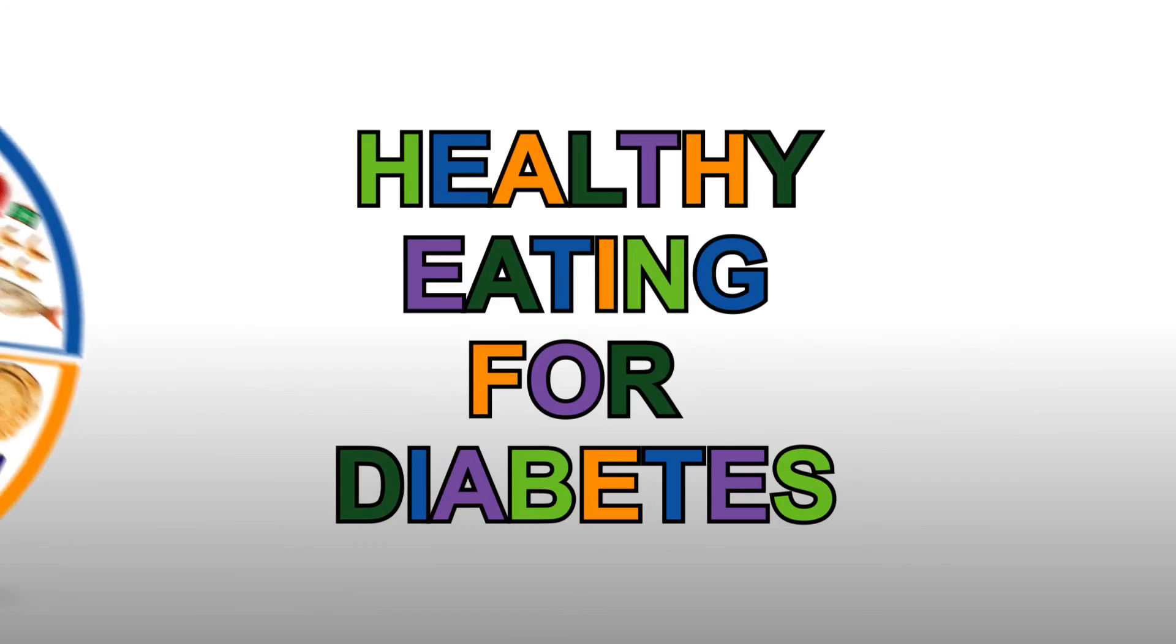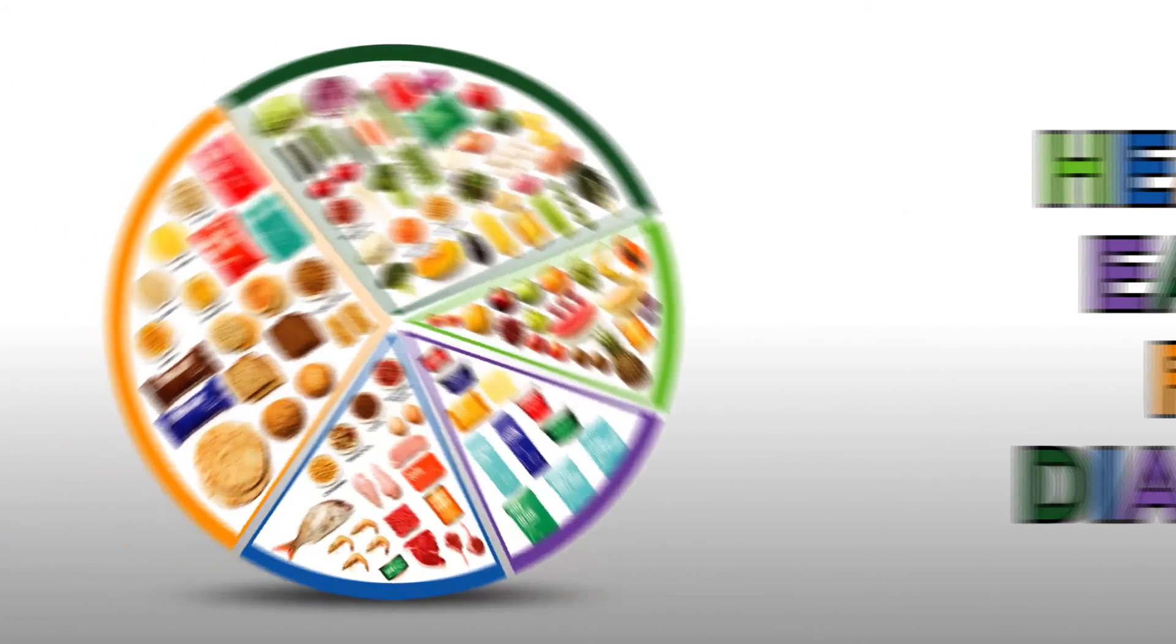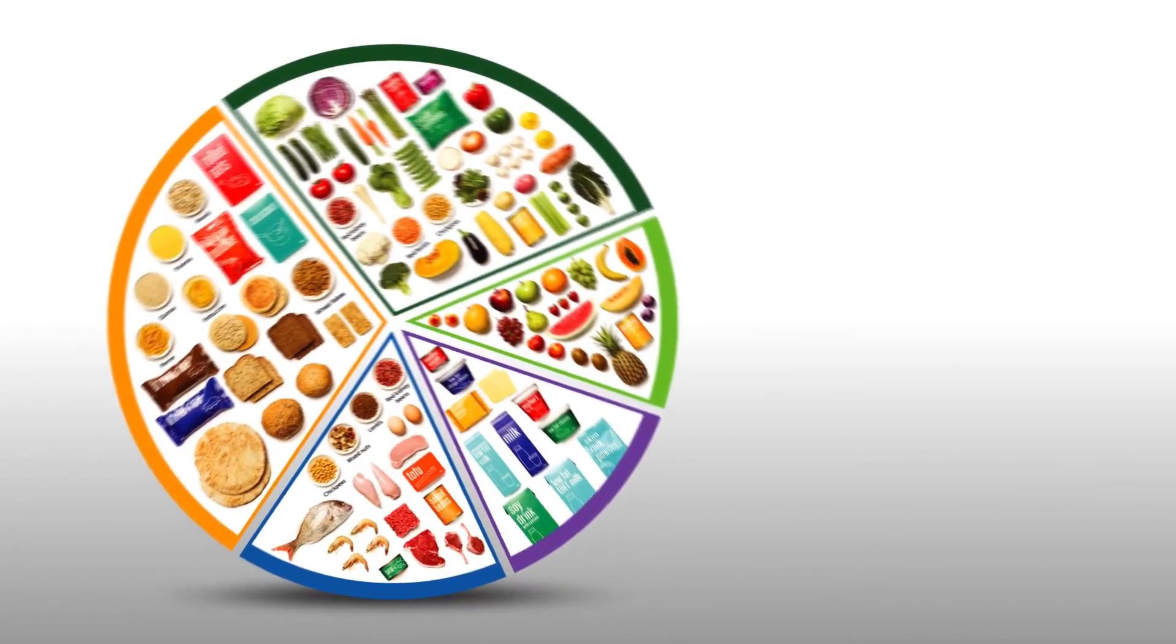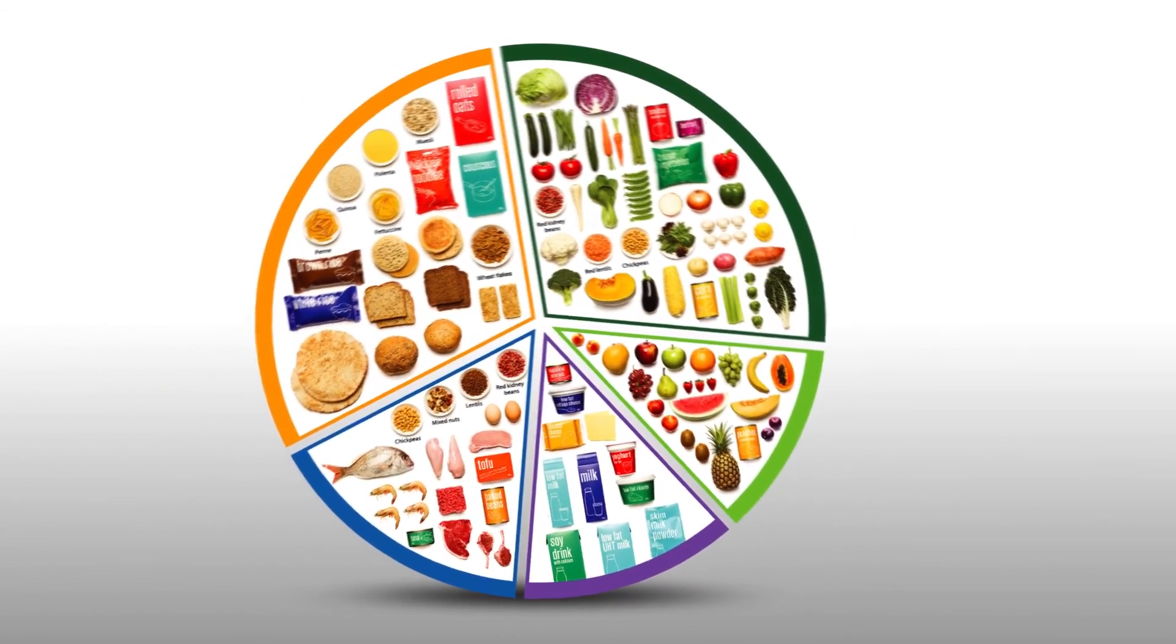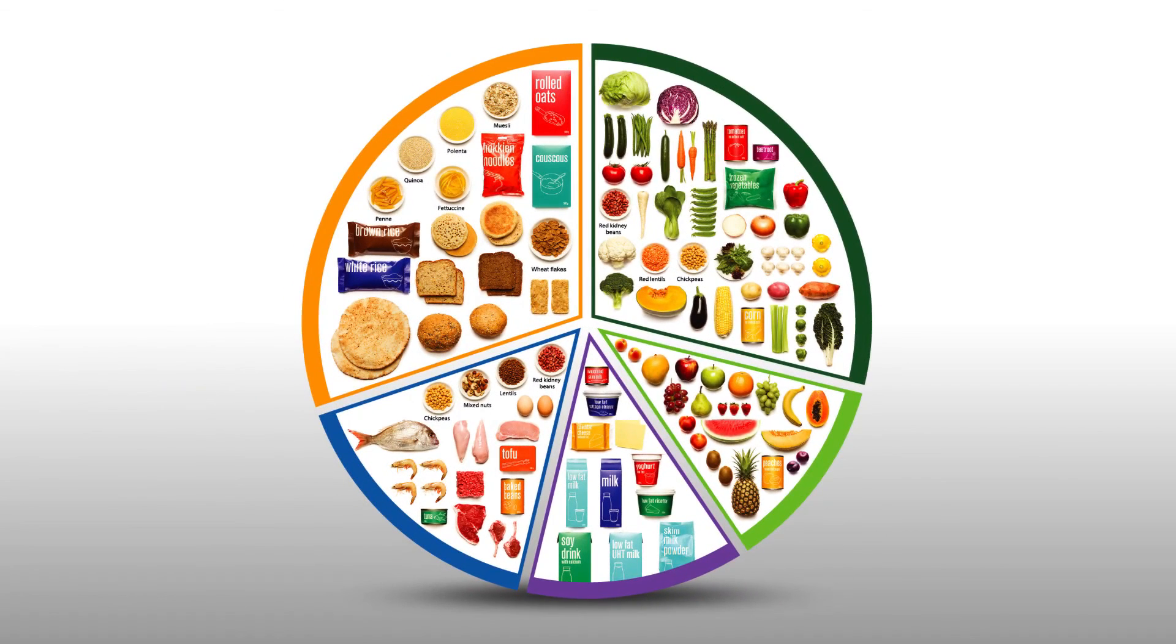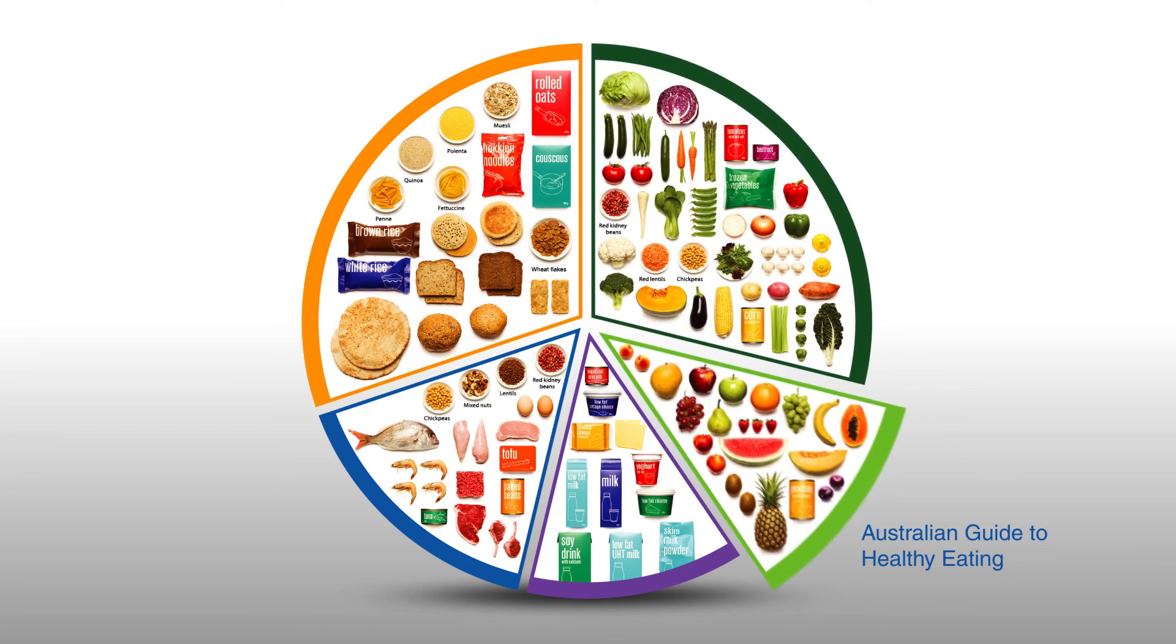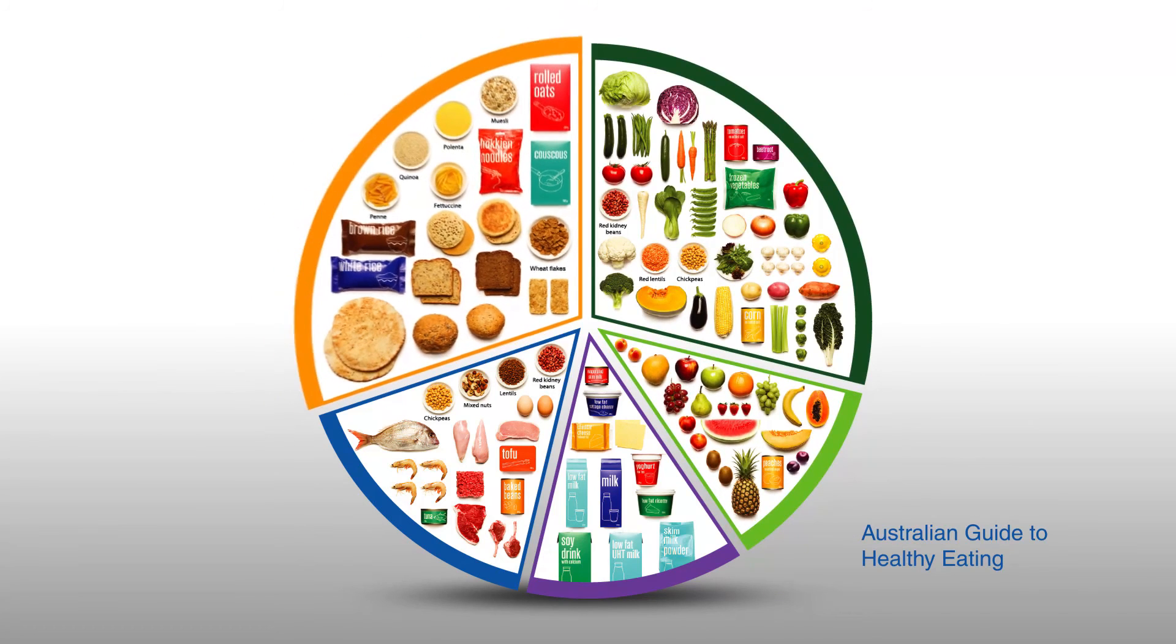People with diabetes do not need to buy special foods or cook separate meals. The whole family can eat the same healthy foods as outlined in the Australian Dietary Guidelines. Enjoy a wide variety of nutritious foods from the five food groups including plenty of vegetables and legumes, fruit, and grain foods, mostly from whole grain varieties.